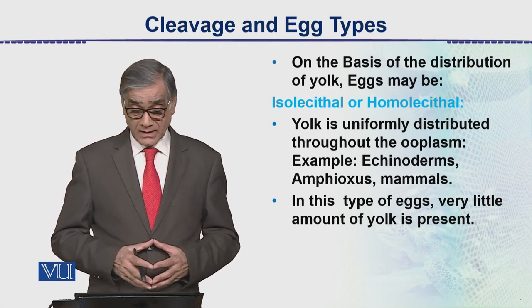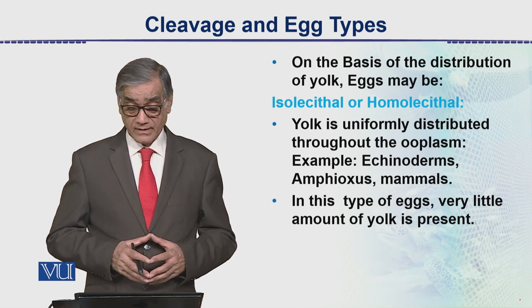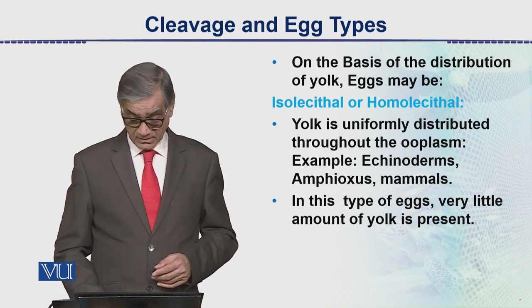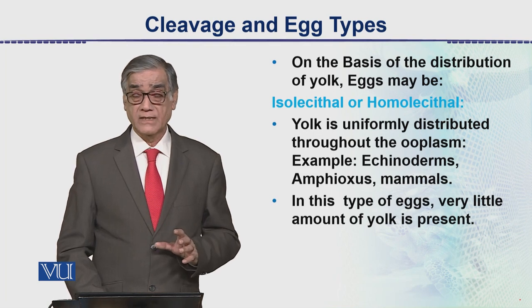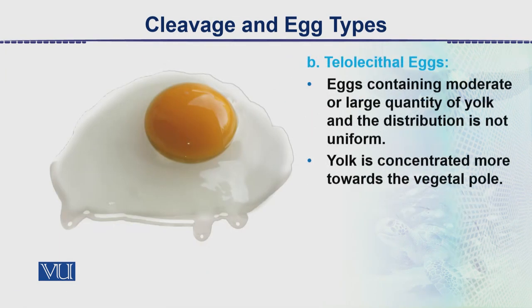In this case, the amount of yolk present is very little. There is another type of egg called the telolecithal egg. As we can see, this is a hen's egg whose shell has been broken, and inside there is a large amount of yolk, and the rest is all albumen. So this is all about cleavage and the different types of eggs which have been classified in different ways.